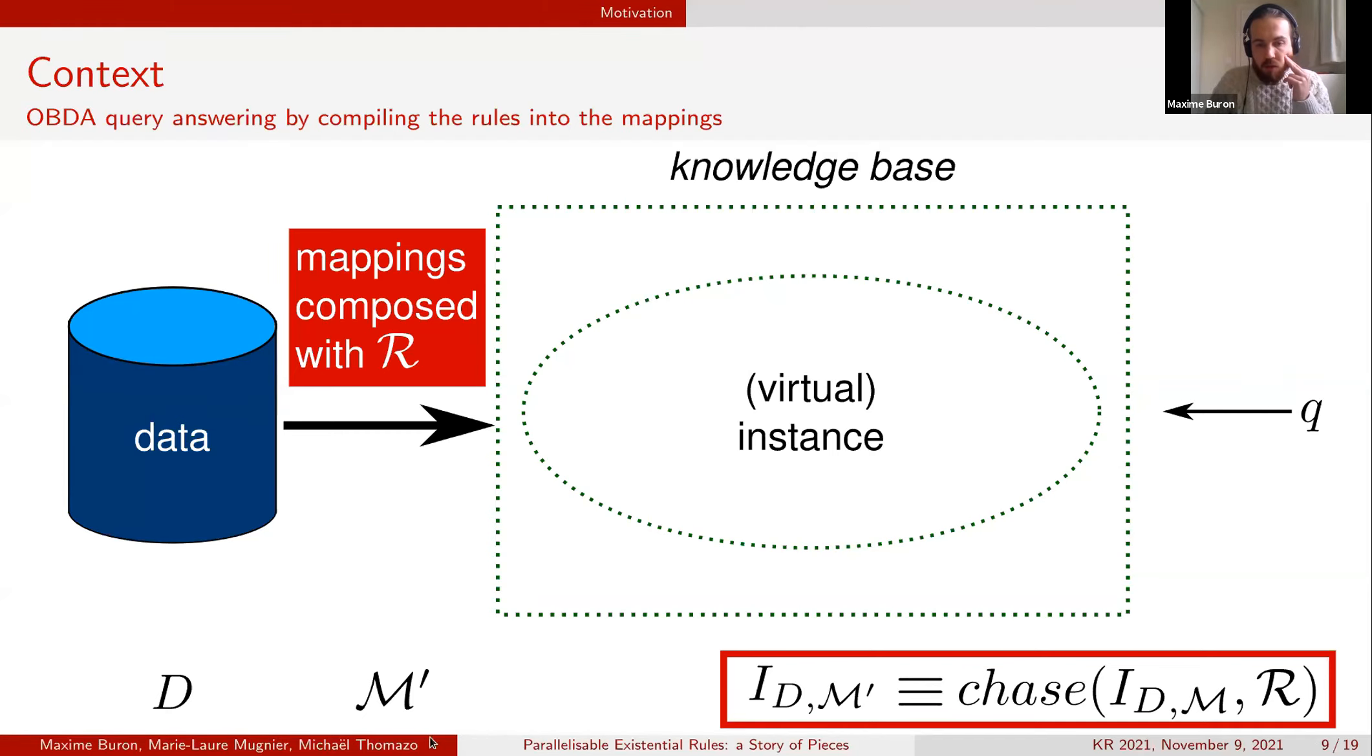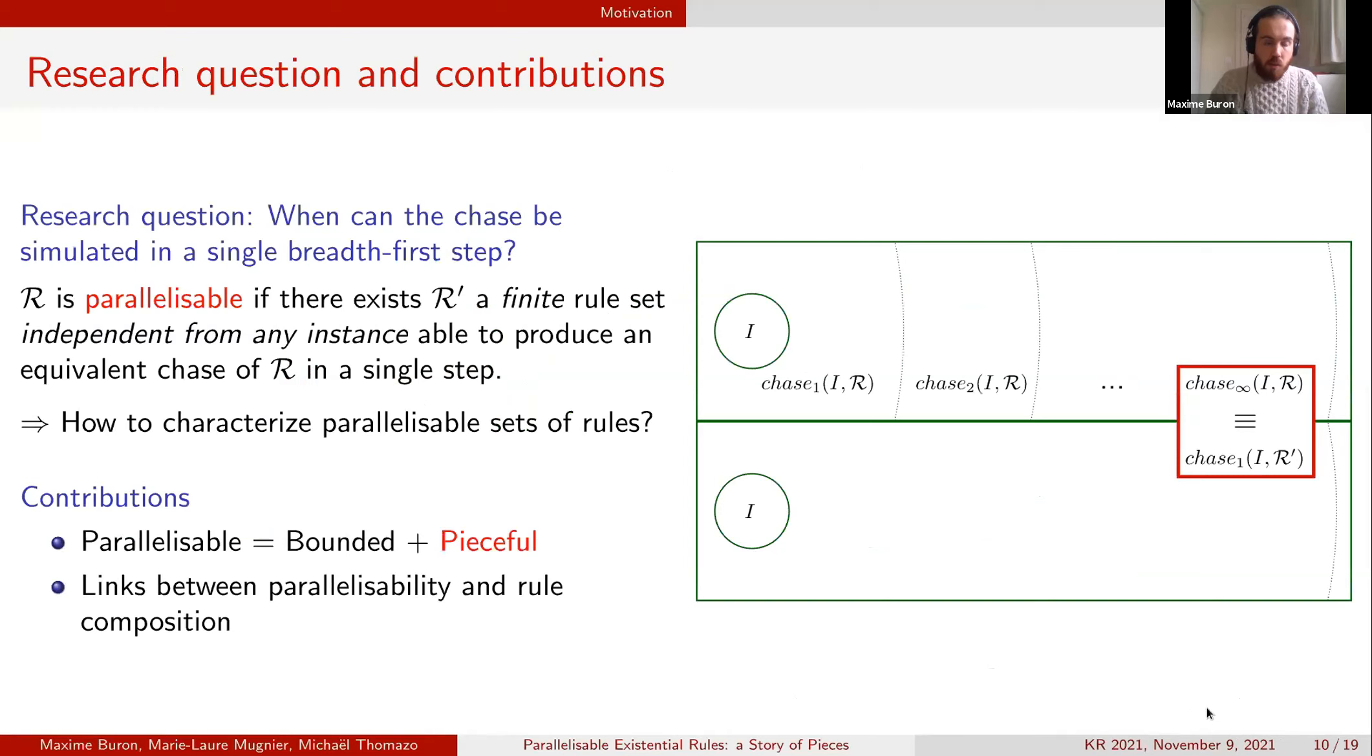The chase of R on the instance generated by D and the original set of mappings M. Now we want to abstract from the ontology-based data access settings and consider only a single set of existential rules.